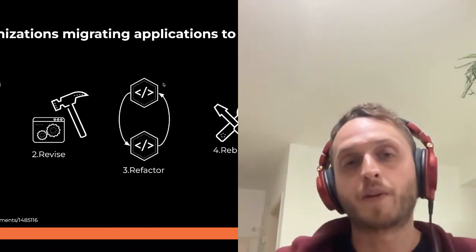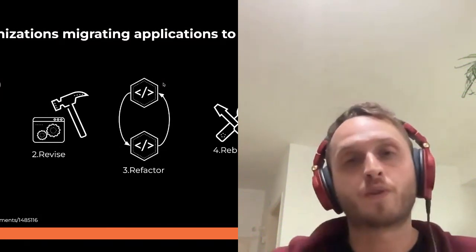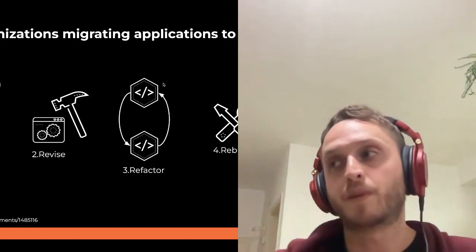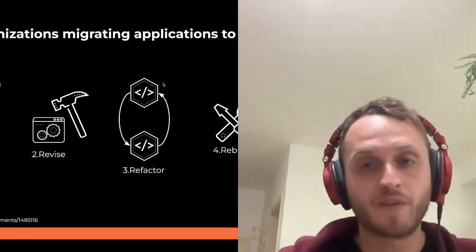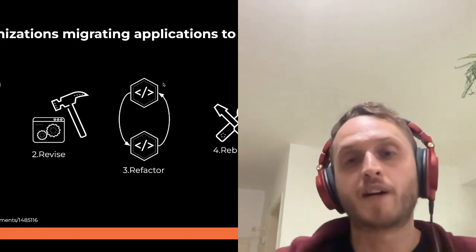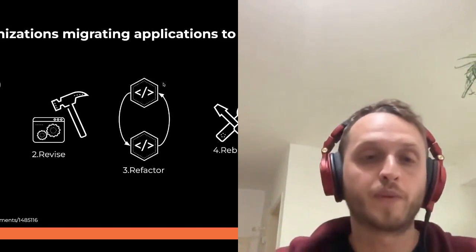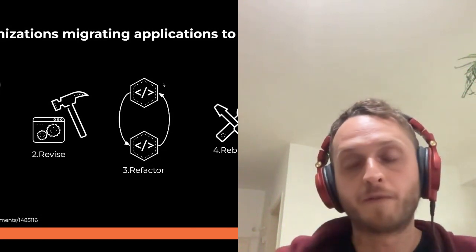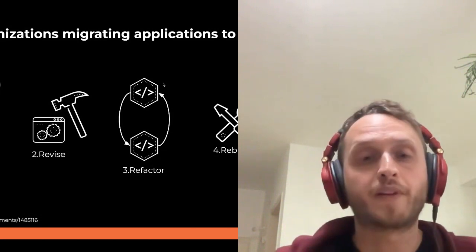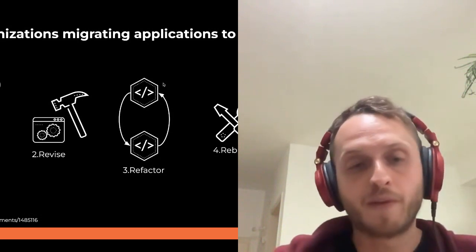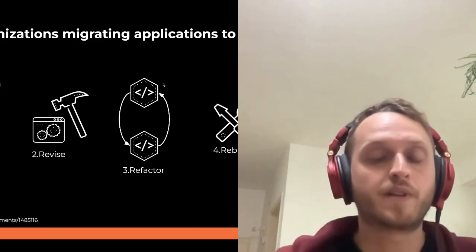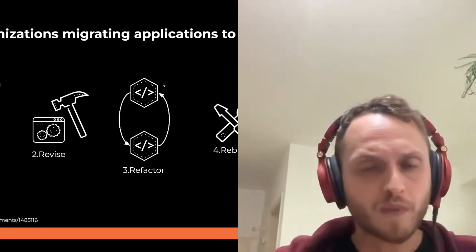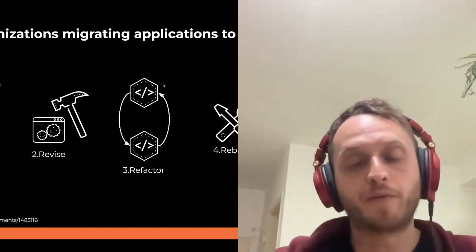This is where open source cloud native software tools really come in handy, because you're looking for new solutions and sometimes you don't have time to build your own cloud native solution from scratch, so you turn to open source software available out there. The fifth approach is called replace or repurchase, which means you put your existing application aside and buy a new software-as-a-service application that runs on the cloud and is made for the cloud.